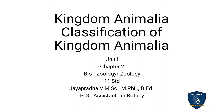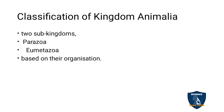Today, our next topic is Kingdom Animalia — Classification of Kingdom Animalia. The animal kingdom has two sub-kingdoms: Parazoa and Eumetazoa.